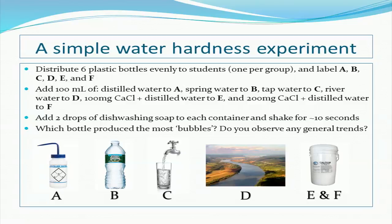To begin this lesson, we will perform a simple experiment to investigate water hardness. Split into six equal groups, each with their own plastic water bottle, and designate your group as either A, B, C, D, E, or F as assigned by your instructor.